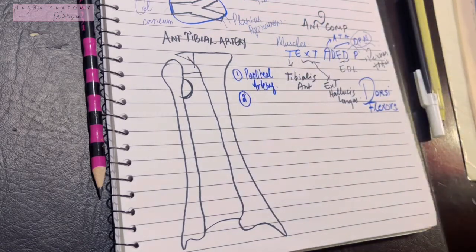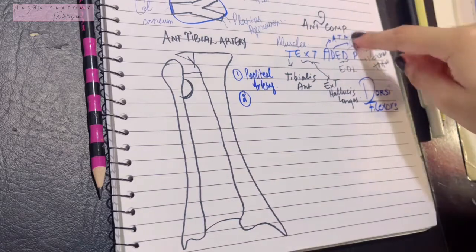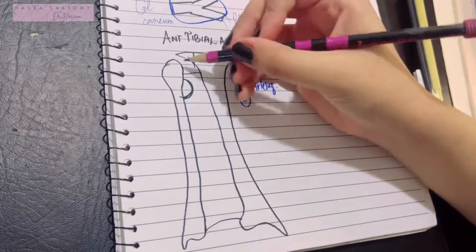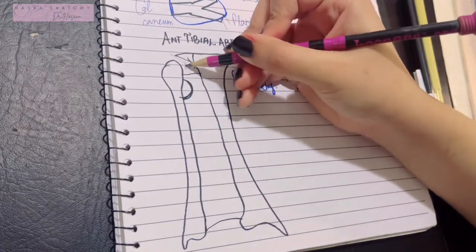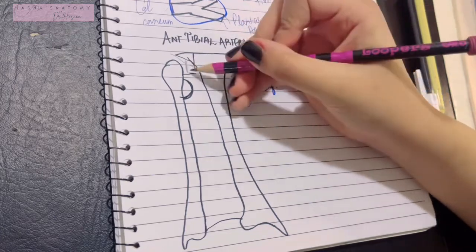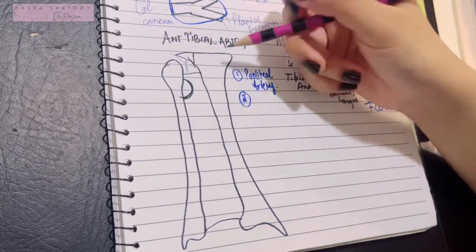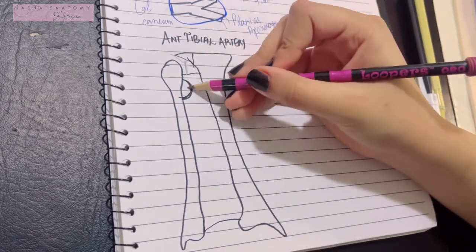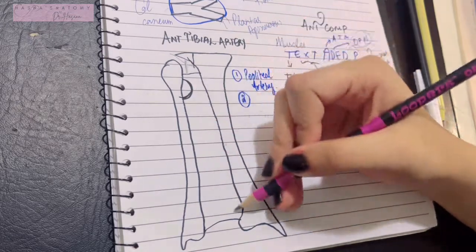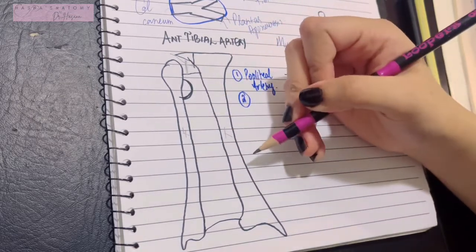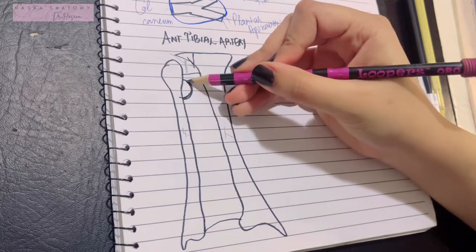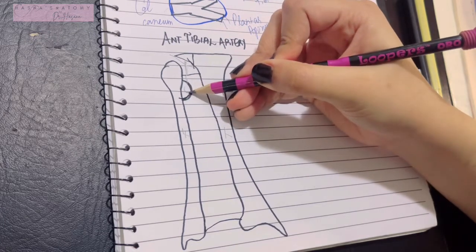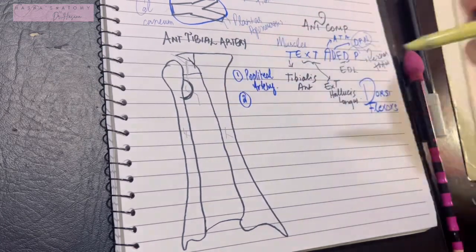Now, since the anterior tibial artery is in the anterior compartment, it has to come to the anterior side of your leg because it's lying on the back. It's still lying behind the two bones — the tibia and fibula. How will it enter the anterior compartment? It enters through an opening in the interosseous membrane lying between the tibia and fibula. The interosseous membrane has an opening on its upper part, close to the fibula, through which the anterior tibial artery enters the anterior compartment of the leg.